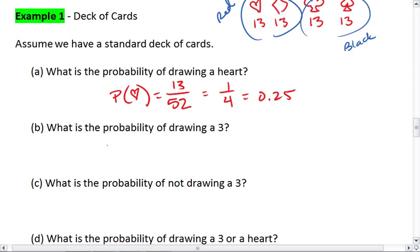The probability of drawing a 3. There are four 3s in the deck, because we have a 3 of hearts, 3 of diamonds, 3 of spades, and 3 of clubs, which means the probability of a 3 is 4 over 52, or 1/13.